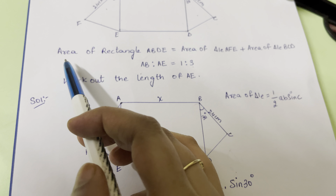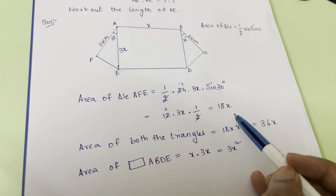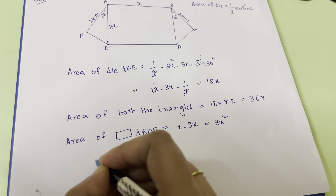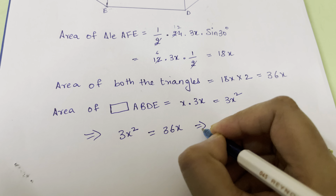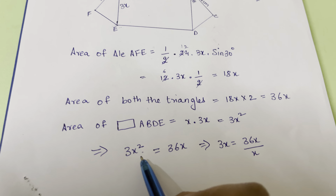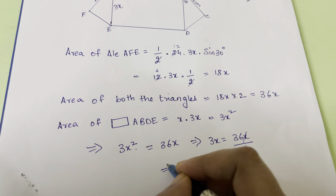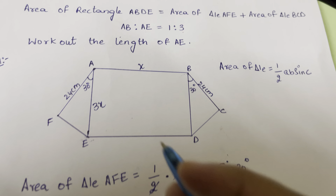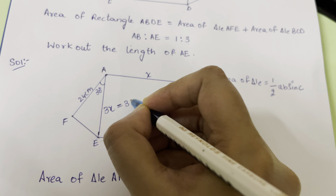From the question, area of rectangle ABDE equals the sum of the two triangle areas. So 3x² = 36x. Dividing both sides by x gives 3x = 36. Since AE = 3x, the length AE equals 36 centimeters.